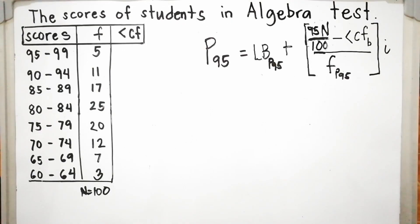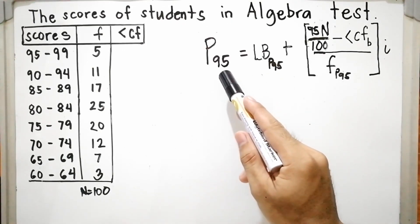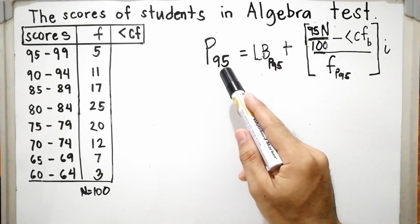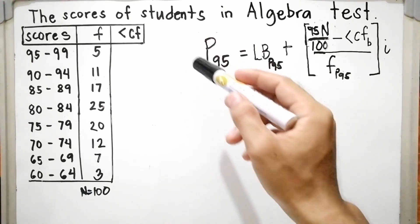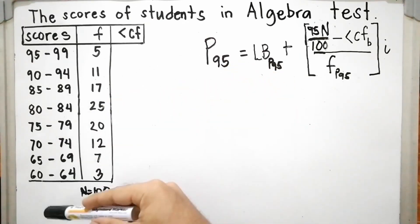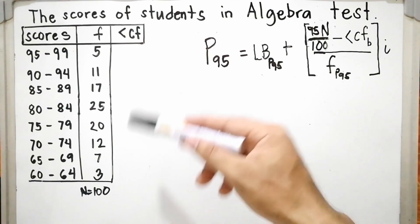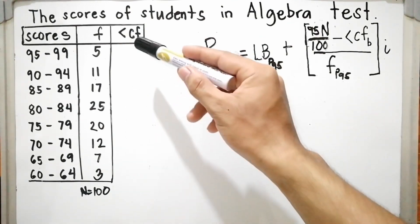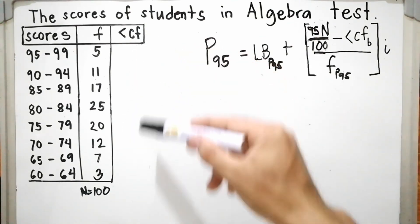Let us calculate the 95th percentile, or P sub 95. The given are the classes and the frequency. Therefore, we need to add the column of the less than cumulative frequency.